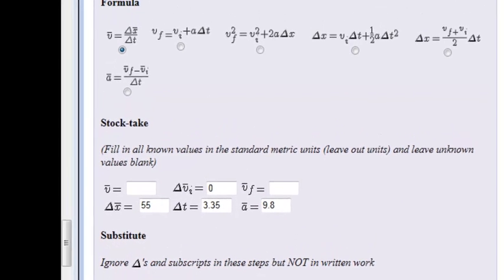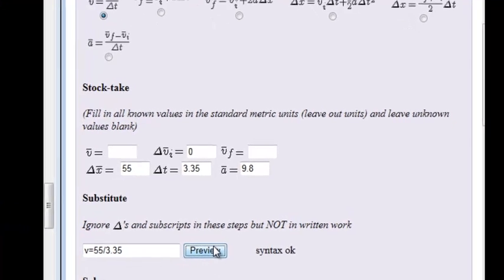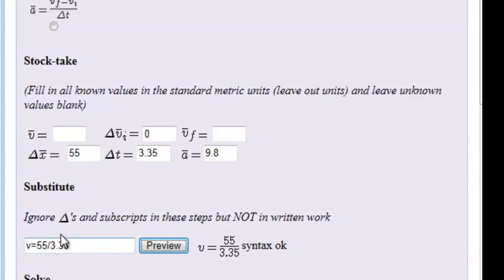My average velocity is equal to, and now this is my substitution step where I use this formula: 55 divided by 3.35. Oh, I made a mistake, 3.35. Preview. Remember not to use units in this step, only in your final answer.